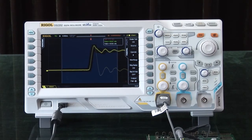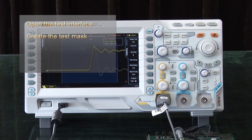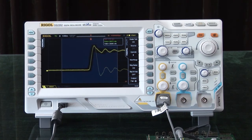This concludes the introduction to the pass-fail testing capabilities of Rigol Oscilloscopes. The key points include opening the test interface, creating the test mask, setting the output mode, and enabling the test function. Thank you.